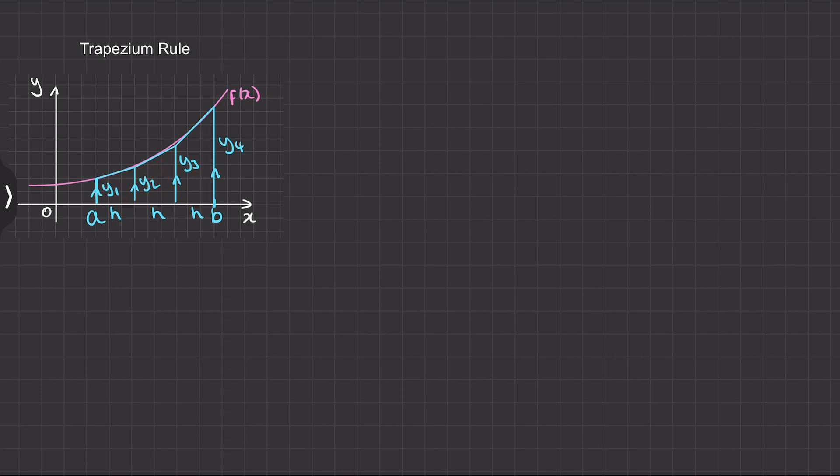Okay, so now we can work out the area of each of these separate trapezia. Well if we look at the general formula for the area of a trapezium we've got a and b and h. So the area of a general trapezium will be one half of a plus b times the width of the base h.